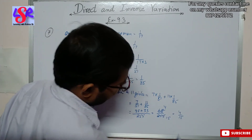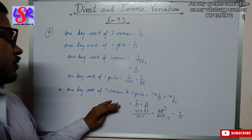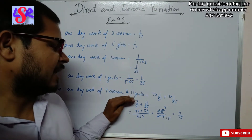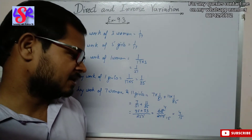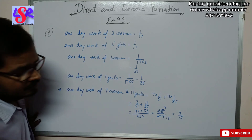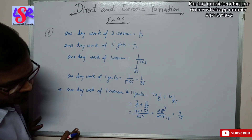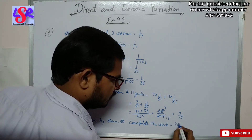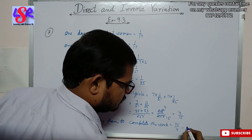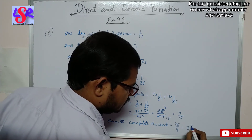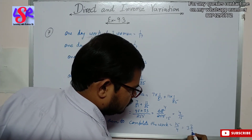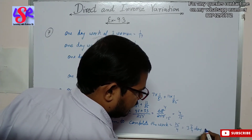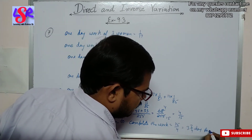So 4 upon 15 part of the work is completed by 7 women and 11 girls in a single day. The time taken to complete the work will be 15 upon 4 days, that is 3 and 3 upon 4 days as the answer.